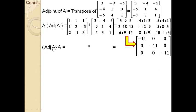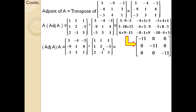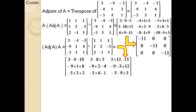Next, compute adj(A) × A. Using the basic matrix multiplication operation of matrices, you will get a computation that, when solved, gives the same resulting matrix as before. Previously, solving A × adj(A) gave one matrix; now multiplying adj(A) × A gives the same matrix. You need one more calculation to confirm the theorem is correct.